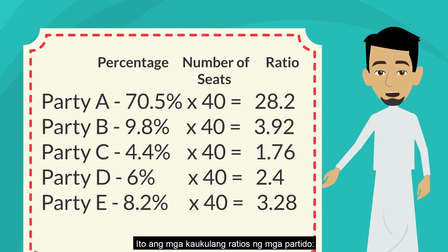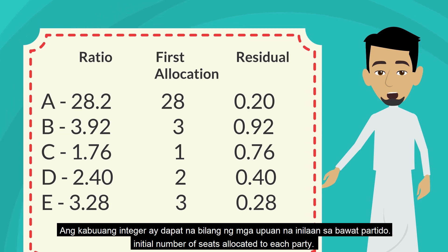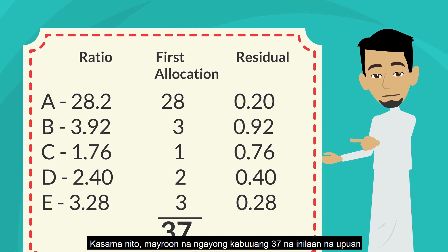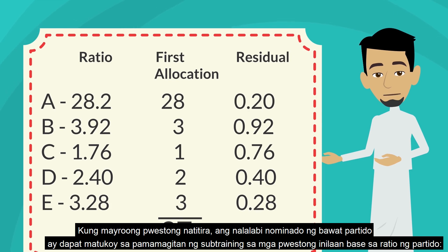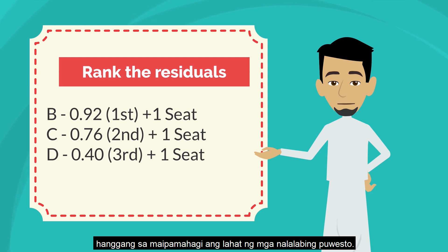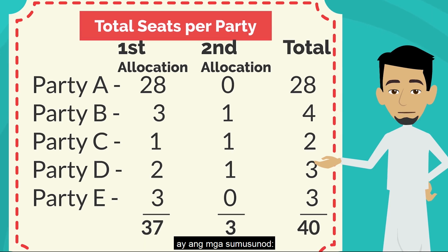These are the corresponding ratios of the parties. The whole integer shall then be the initial number of seats allocated to each party. With this, there is now a total of 37 allocated seats. The decimals, regarded as the residuals, will determine the allocation of the remaining seats. The remaining seats shall be distributed by rank — the party with the highest residual receives the first seat until all seats are distributed. In this case, there are 3 seats available, so the parties with the top 3 residuals will gain an additional seat. The total seats allocated per party is as follows.